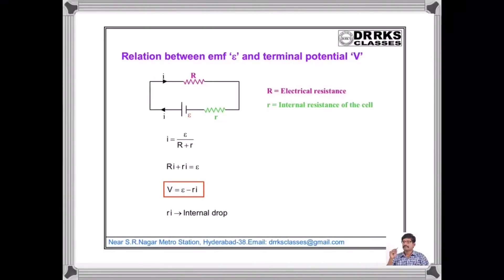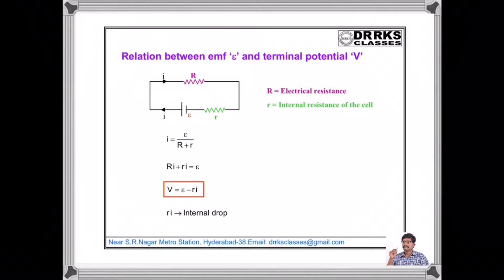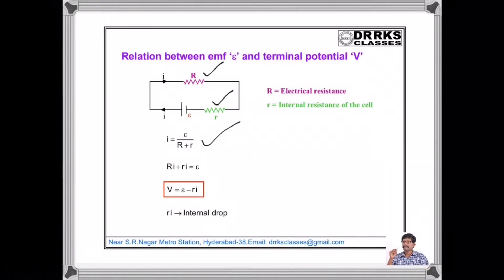Let us find the relation between EMF E and terminal potential V. EMF is the potential difference between the two terminals when the cell is in open condition, whereas the terminal potential is the potential difference between the two terminals when the cell is in closed condition, that is when you are drawing current from the cell. In a circuit where a cell of EMF E and internal resistance r is connected to an external resistance R, the current I = E / (R + r).